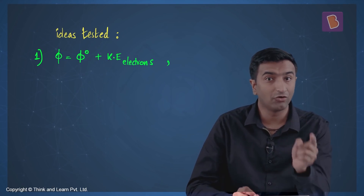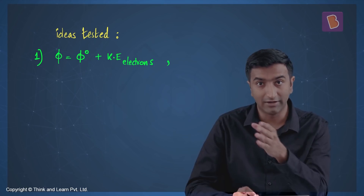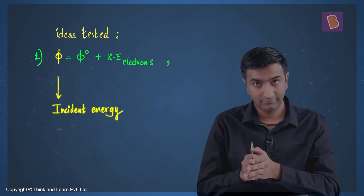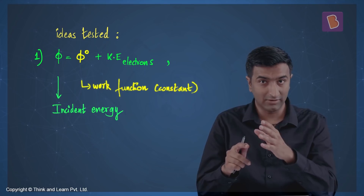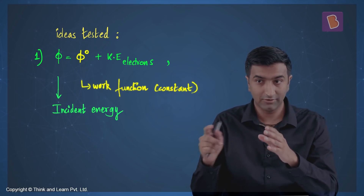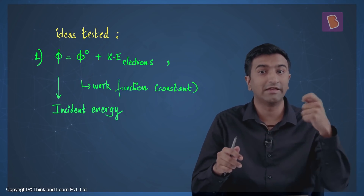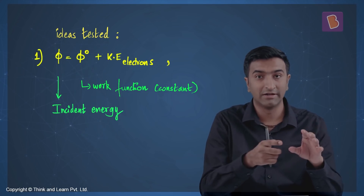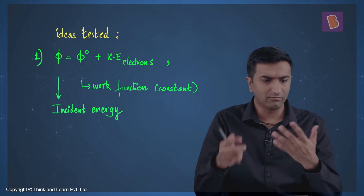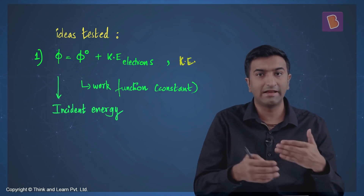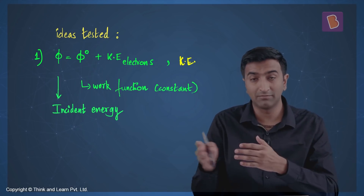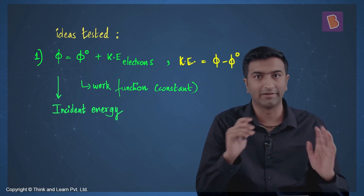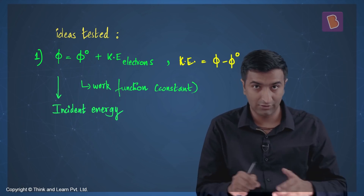First, the idea of the photoelectric effect and the work function. There's some incident energy φ, and φ₀ is the work function. If the incident energy is greater than φ₀, then some electrons are ejected which will have some kinetic energy — that's what this equation tells us. The kinetic energy of the electrons will simply be equal to φ minus φ₀. That's one idea we need to use through this question.